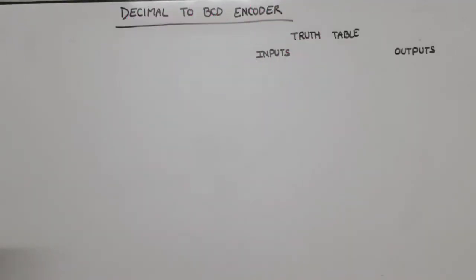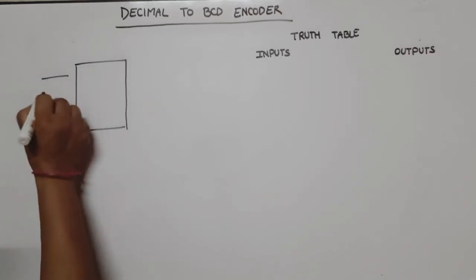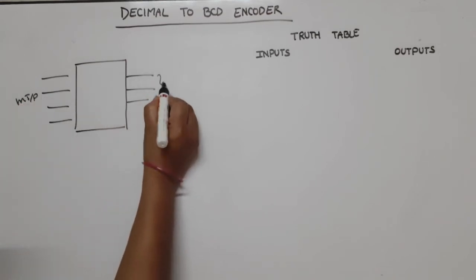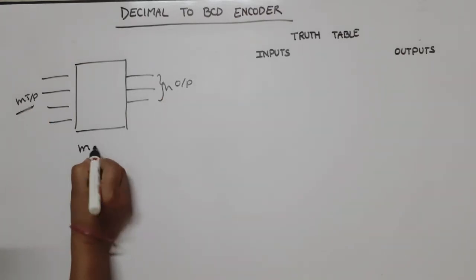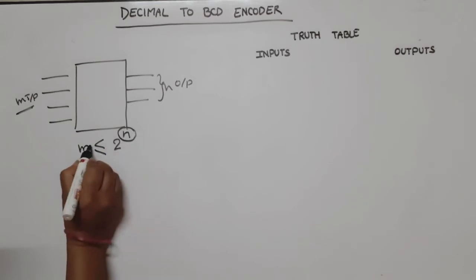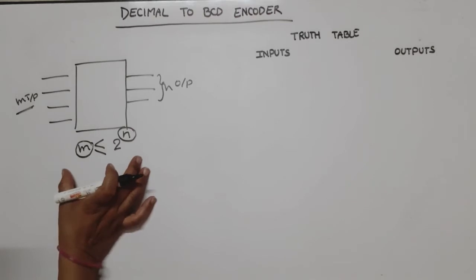Everyone, in this video lecture of digital electronics I am going to design decimal to BCD encoder. Before explaining decimal to BCD encoder, we will see what is encoder. Basically, encoders have m input lines and n output lines, where m is less than or equal to 2 raise to power n.